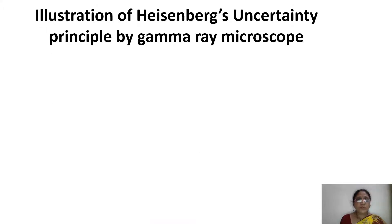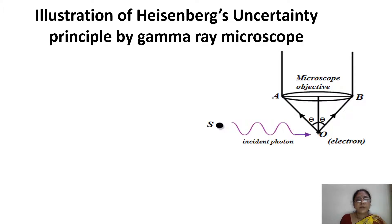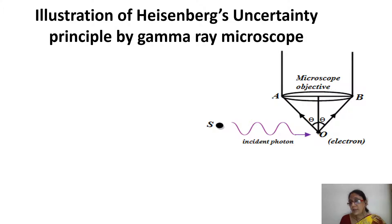Knowing this uncertainty principle, let us illustrate it in the case of a gamma ray microscope. This is an imaginary experiment of Heisenberg's uncertainty principle using a gamma ray microscope. In the figure, S is a source from which a gamma ray photon is incident on an electron at O. We have to measure both the uncertainty in position and momentum of the electron at O. When the gamma ray photon incident from source S strikes the electron at O, Compton scattering occurs — the photon gets scattered along OA or OB and the electron recoils.